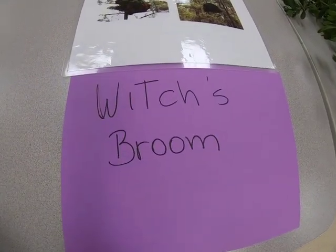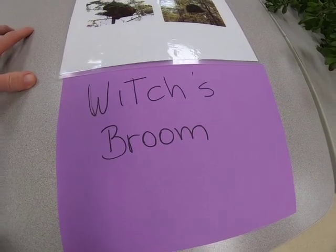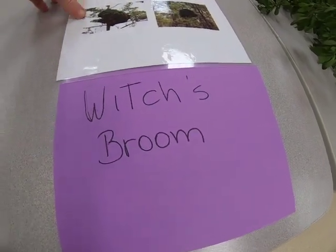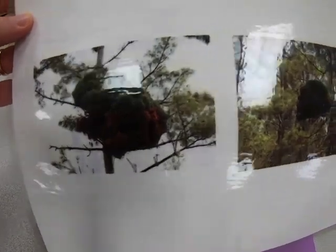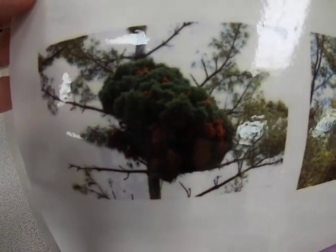Witch's broom refers to a condition that we see on trees or woody plants in general where we have a congested, abnormal growth pattern. You can see it here — this is on pines, but it can occur on hardwoods as well. Most frequently we see it on conifers, where the branches grow very densely in sort of a ball, and over time that ball gets bigger and bigger.